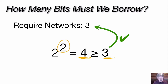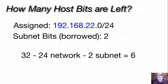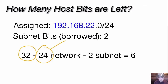The math is pretty easy with two bits — all you have to do is remember how to multiply by two. Now the question is, how many host bits do we have left? If we start with our 32 total bits, we take the 24 that are the assigned network, we take out the two that we've borrowed, and that leaves us with six.